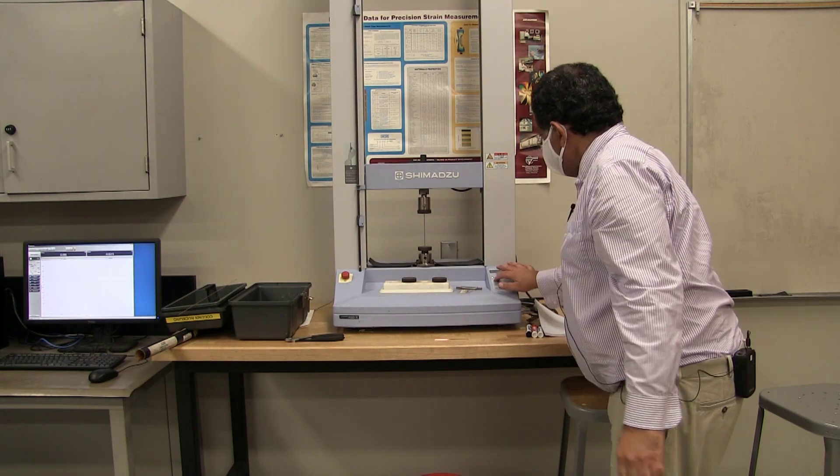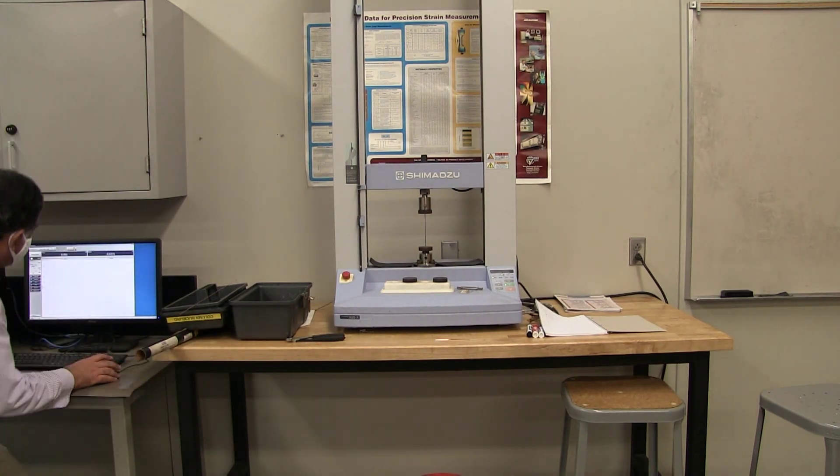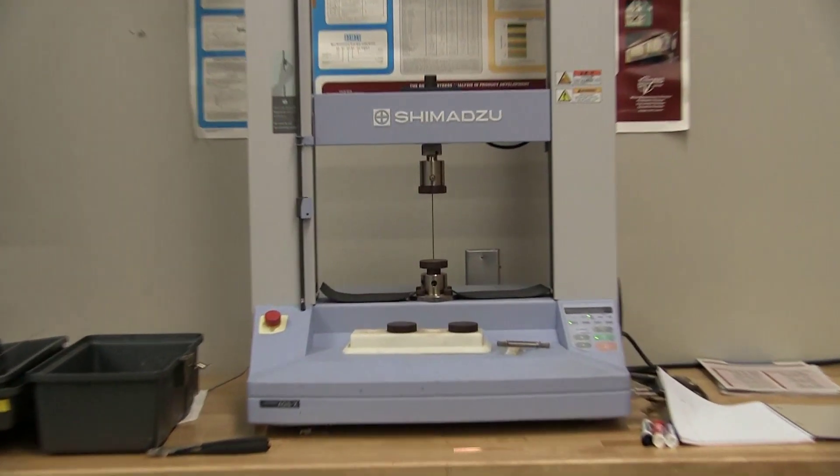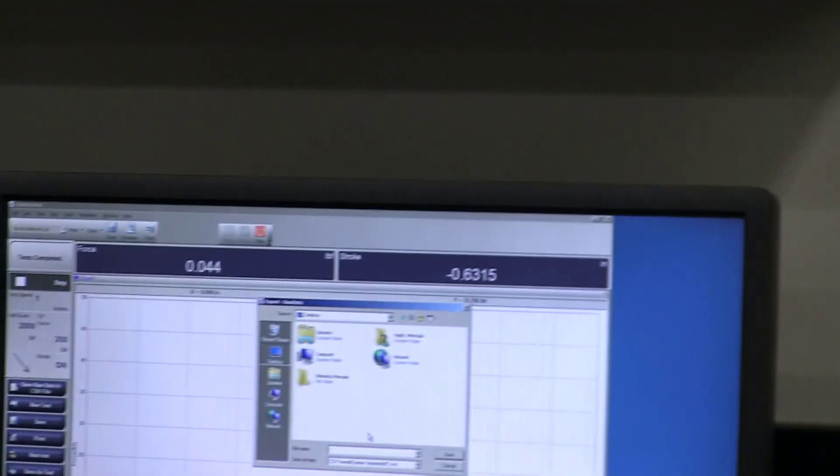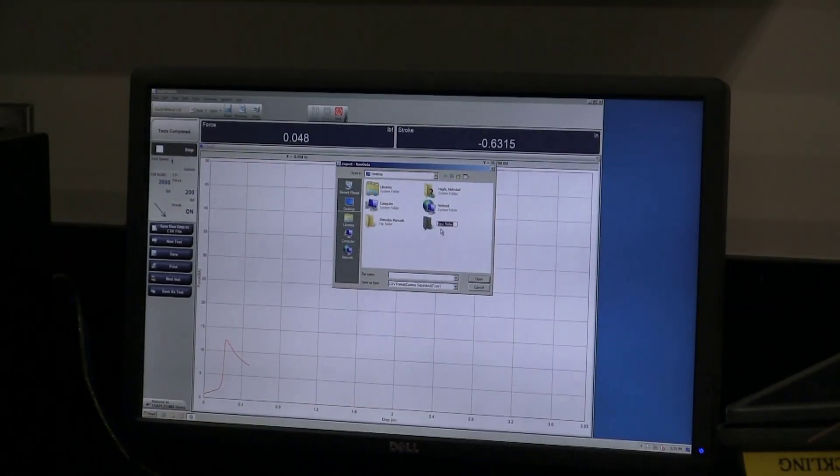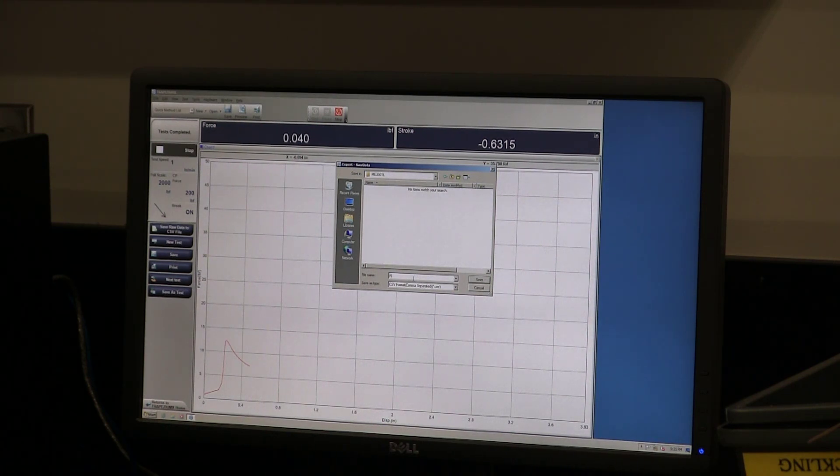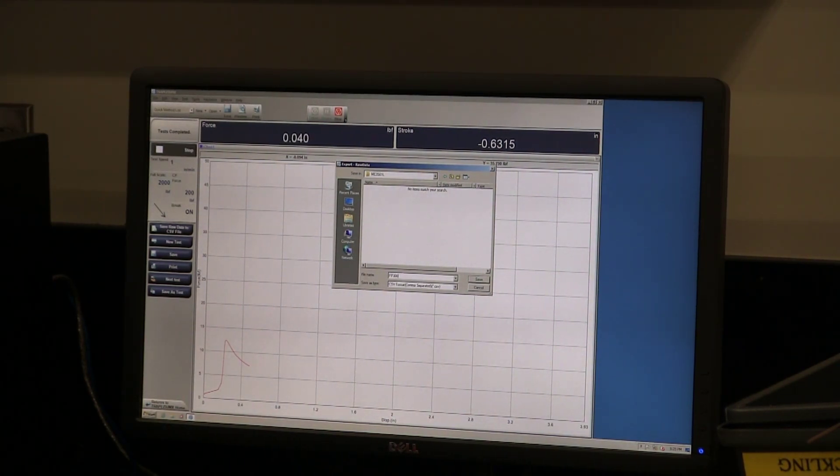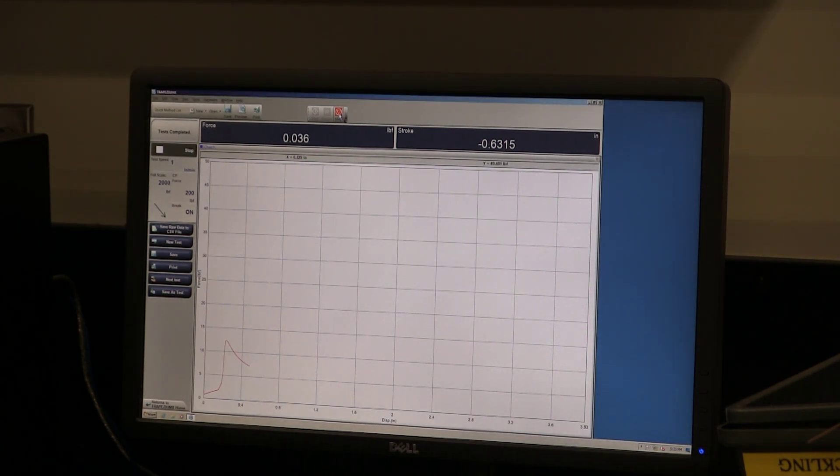There we are. It's in position now. Now I'm going to save the information for this test, save raw data to CSV. We'll call it pin-pinned three inches. Then now I'm going to run a new test. I'm going to close this one.